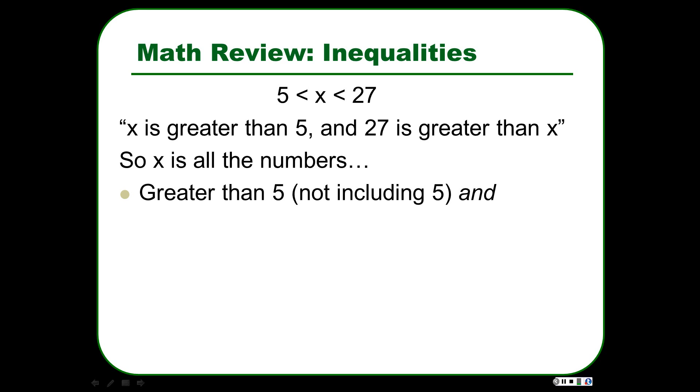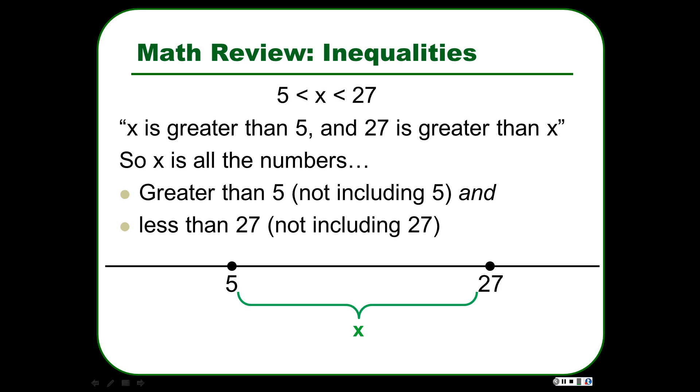Its relationship with 5 is that it is greater than 5, but it does not include 5. But we also have to keep in mind that at the same time, it is less than 27 not including 27. So if we have a number line with a 5 and 27 on them, x is everything in between. So it's 5.00001 up through 26.99999. So it's 5 to 27 not including either number.